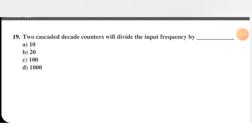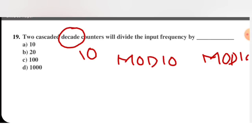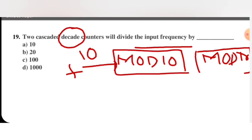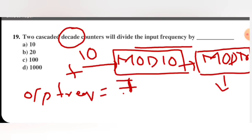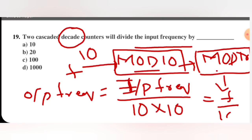Next question: two cascaded decade counters will divide the input frequency by — 10, 20, 100, or 1000? Decade means mod 10. Two mod 10 counters are connected. If input frequency is f, the output frequency equals f divided by the product of the mods. Each mod is 10, so output frequency equals f divided by 10 into 10, which is f divided by 100. C is the right option.